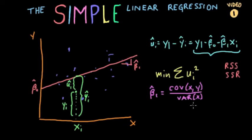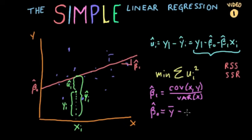Given any dataset you can find the variance of x and covariance of x and y, which gives you beta one in a simple linear regression. Once we have beta one hat, we obtain beta zero hat, which equals the mean of y minus beta one hat multiplied by the mean of x. That is how we find our coefficients in the estimated regression.